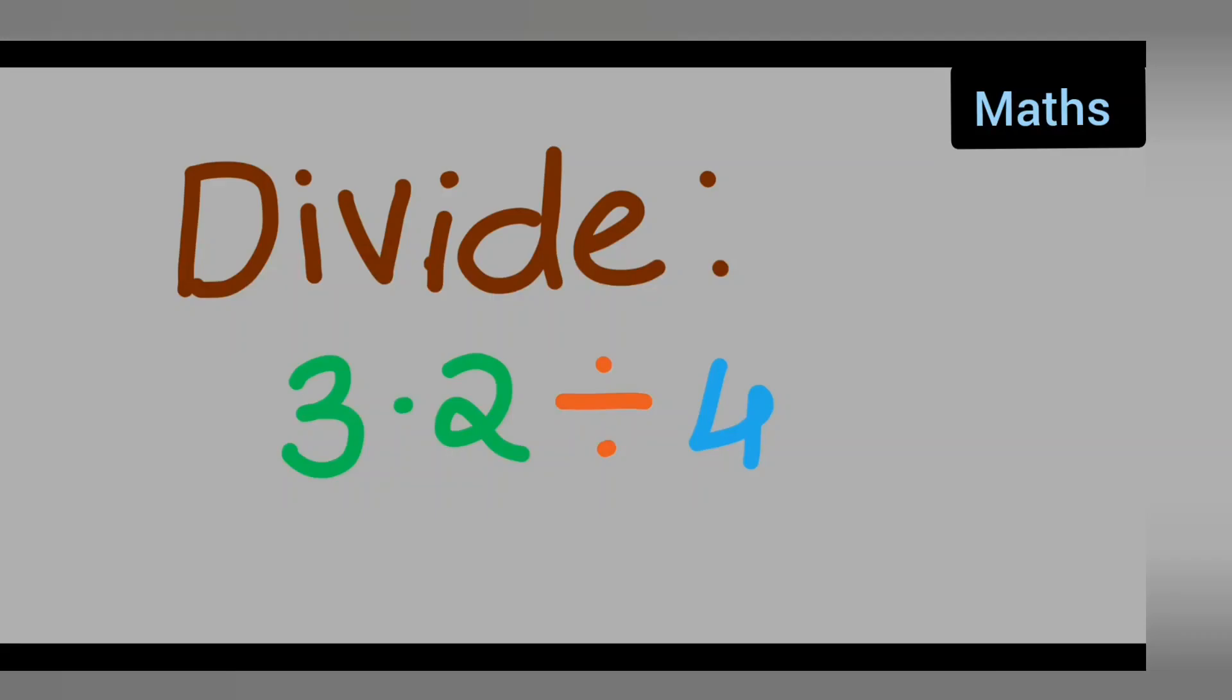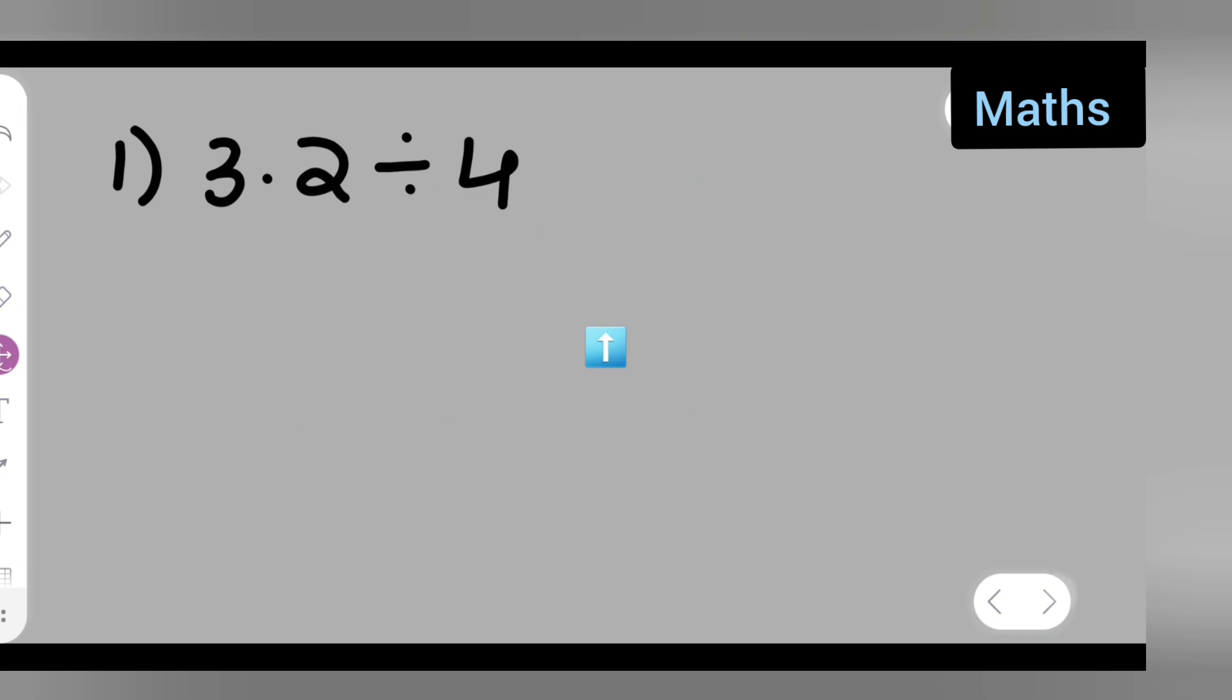Welcome to today's class of mathematics. Today's question is divide 3.2 divided by 4. So let's see how to divide 3.2 divided by 4. Take down the question also. Now I am going to remove the decimal point, so for that I am going to put 32 upon 10 because the decimal point is in the tenth position.